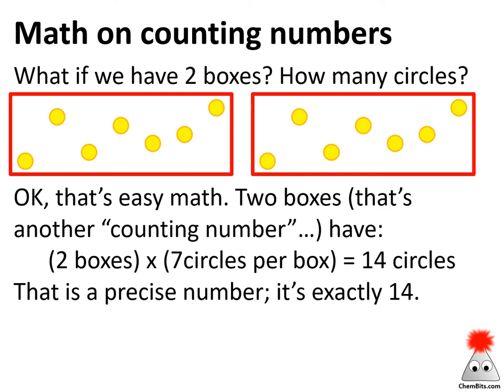What if we've got two of those boxes? I could just go through and count these, or I could do some math. I've got two boxes — that's another infinitely precise counting number — and seven circles in each box. So seven times two is 14. Again, we have an infinitely precise number because we have infinitely precise two times infinitely precise seven. So that's counting numbers — pretty straightforward.